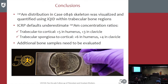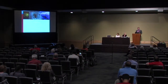In conclusion, we have successfully measured and visualized the Americium-241 distribution within the case-846 skeleton using iKID as well as radiochemical analysis. ICRP defaults underestimated Americium-241 concentration ratios by about 5 times in humerus and 3 times in clavicle for trabecular-to-cortical ratio, and about 6 times and 4 times in humerus and clavicle, respectively, for trabecular spongiosa-to-cortical ratio. This is still an ongoing study and additional bone samples may need to be evaluated given enough time and motivation.